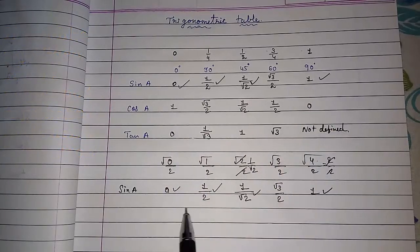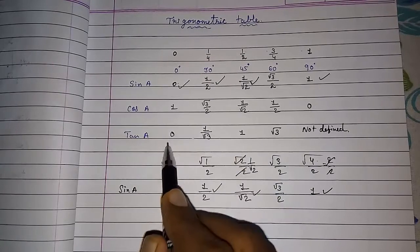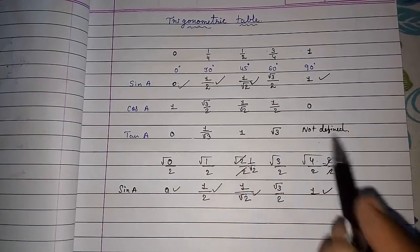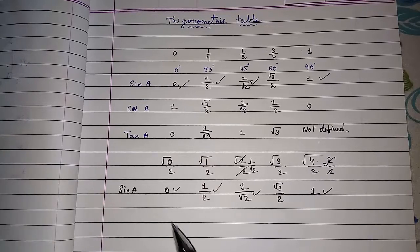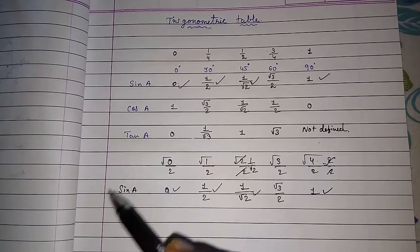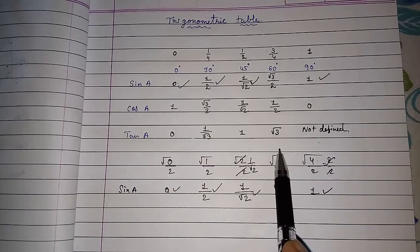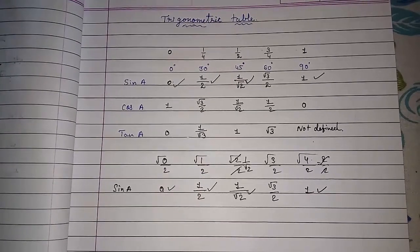Once you have the sine row, reverse the order to get cosine, and then divide sine by cosine to get tangent values. This way you can easily remember the full trigonometric table. Thank you so much for watching — if you liked this video, please subscribe to my channel so I can bring more such videos for you.